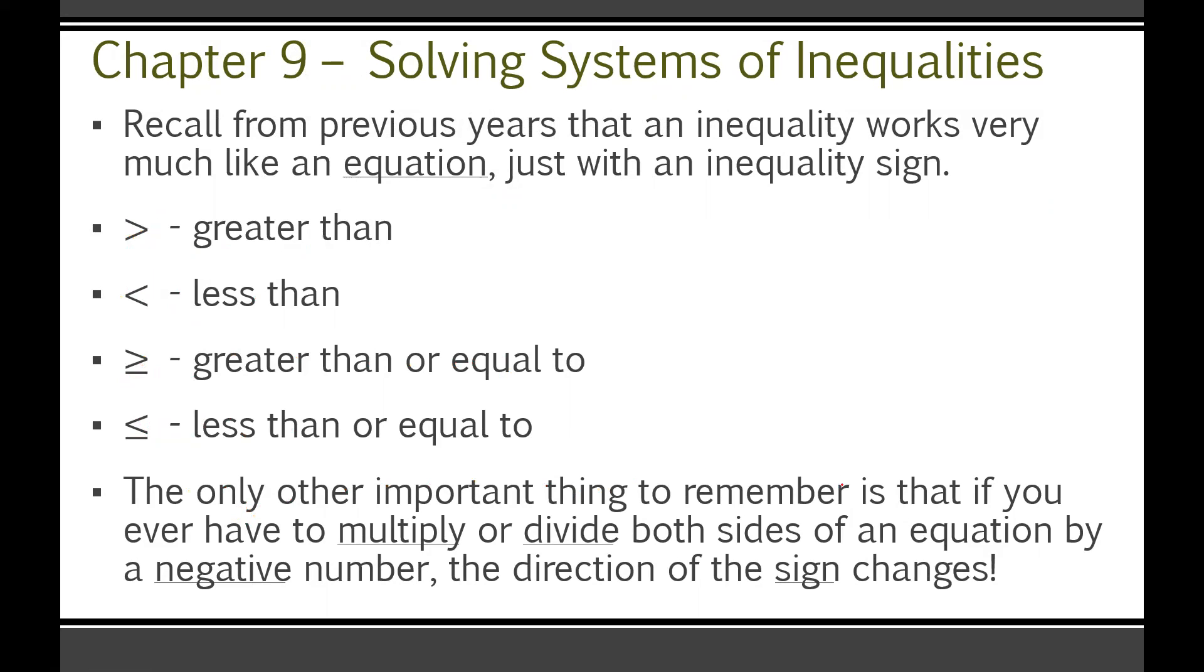The only other important thing to remember is that if you ever have to multiply or divide both sides of an inequality by a negative number, the direction of the sign changes. So in other words, if you had negative 2x is greater than 4, to get x by itself, you'd have to divide by negative 2 on both sides. That's going to make it x is now less than negative 2. So again, if you multiply or divide both sides by a negative number, the direction of the sign changes. It just flips around.